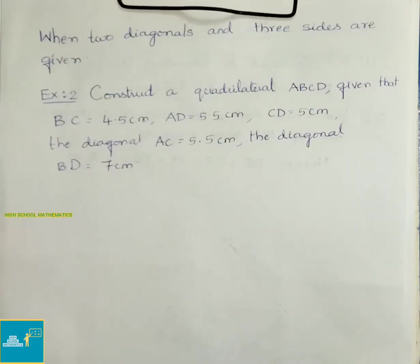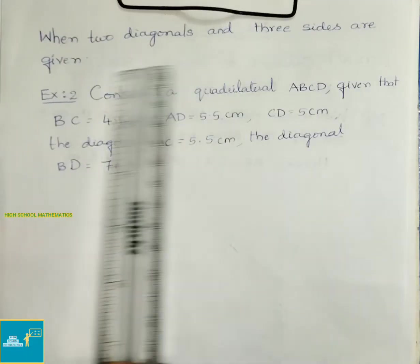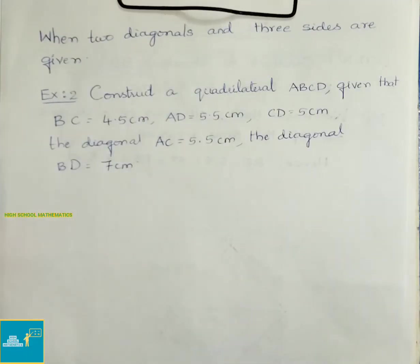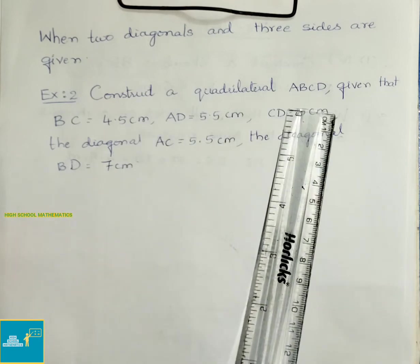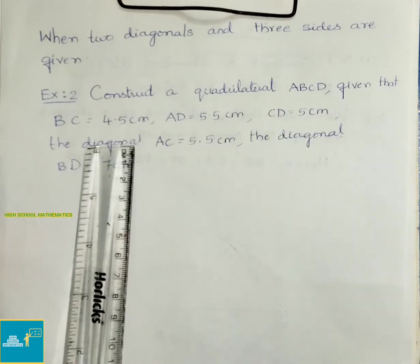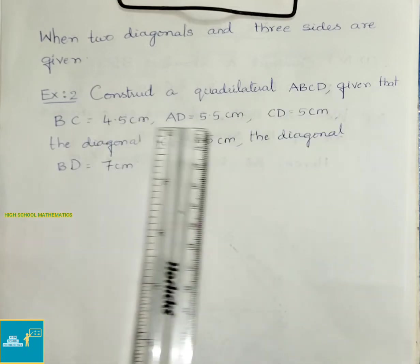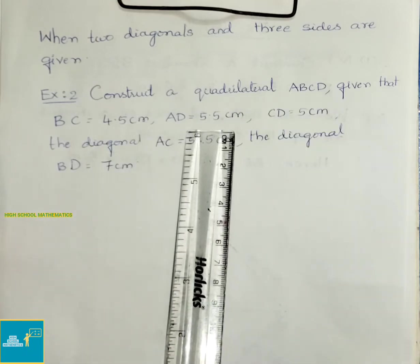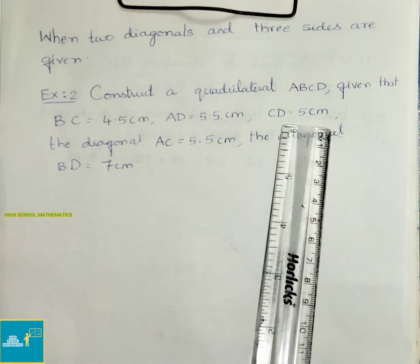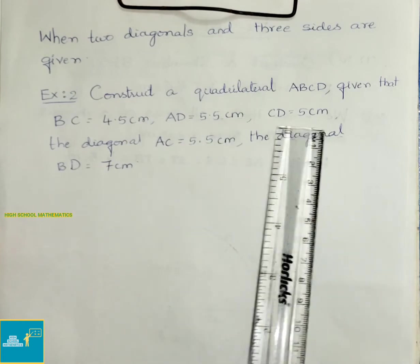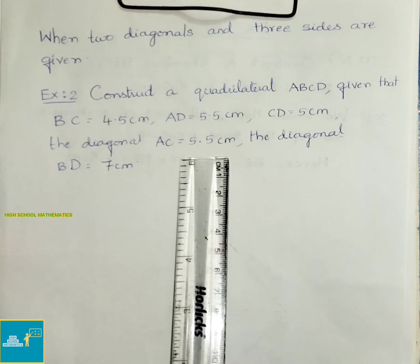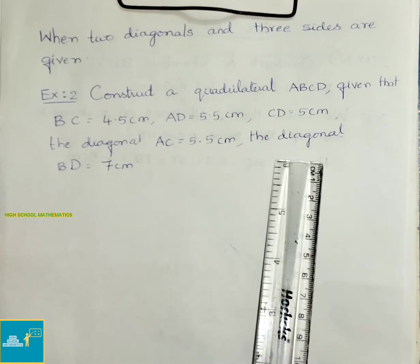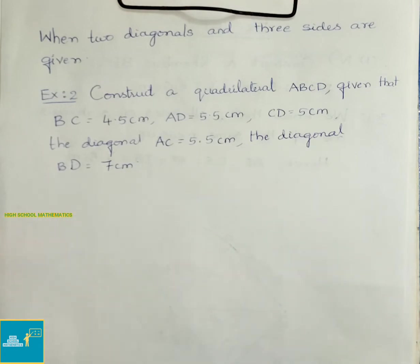When 2 diagonals and 3 sides are given, let us see an example. Construct a quadrilateral ABCD, given that BC equals 4.5 cm, AD equals 5.5 cm, CD equals 5 cm, diagonal AC equals 5.5 cm, and diagonal BD equals 7 cm.